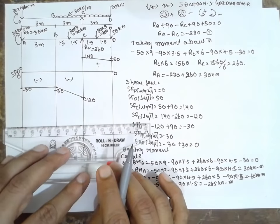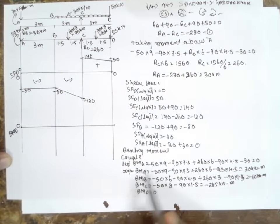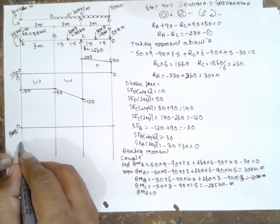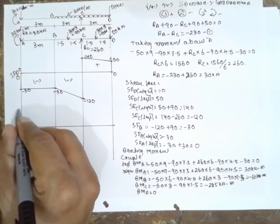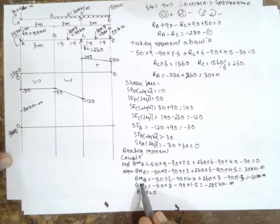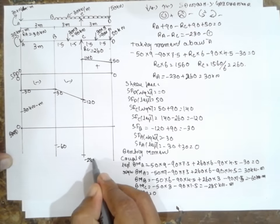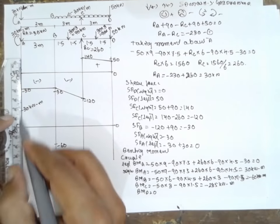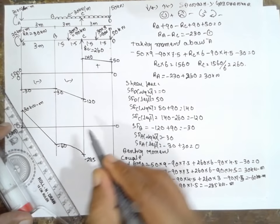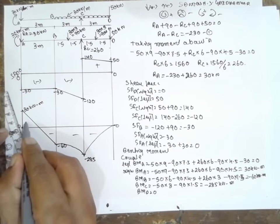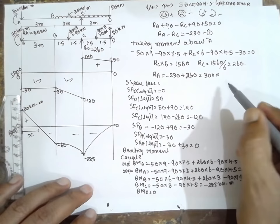Drawing the bending moment diagram: BMD at D is 0. At A it is minus 30 on the left and positive 30 kilonewton meter on the right. At B it is minus 60. Where there is no UDL, we draw an inclined straight line. Where there is a UDL, we draw a parabola. The regions are negative, negative, negative, and positive. We need to find the distance X for the point of contraflexure.